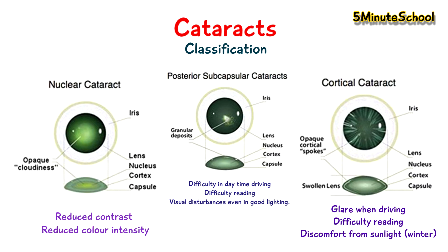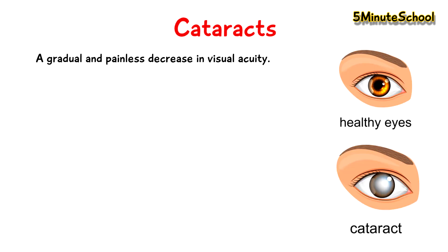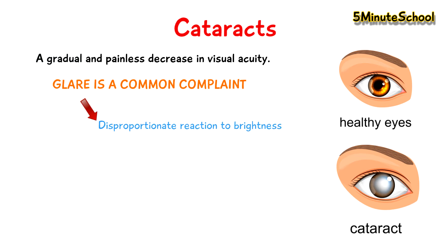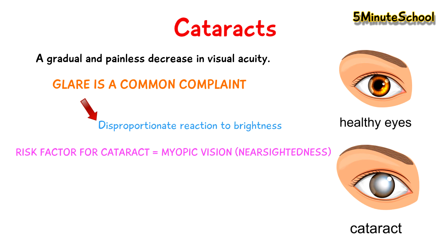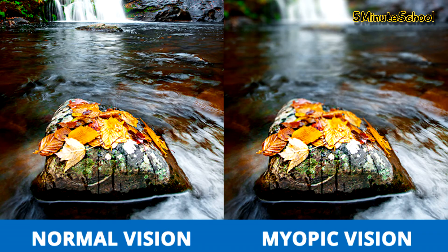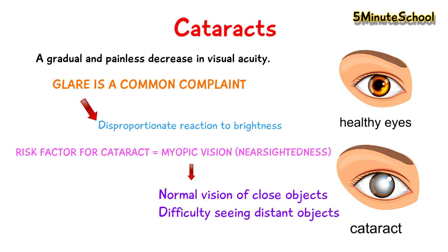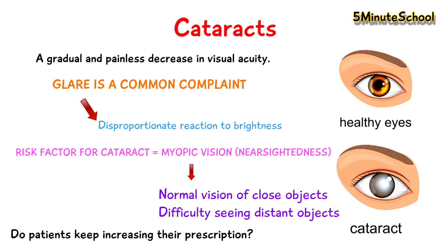The presentation of cataracts is a gradual, painless decrease in visual acuity. Glare is a common complaint — that's a disproportionate reaction to brightness, which may also appear as a decrease in contrast sensitivity or colour vision. A risk factor for cataracts is myopic vision, also known as near-sightedness, where you have difficulty seeing distant objects. Patients are often noticed to keep increasing their prescription.